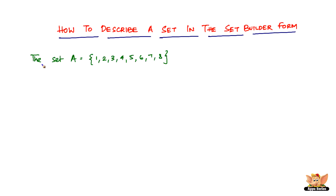Here is an example. Say we've got a set A, which is in the roster form: {1, 2, 3, 4, 5, 6, 7, and 8}. Now, how do you describe this particular set in the set builder form? We write A equal to, open the bracket — there are eight elements in this set.